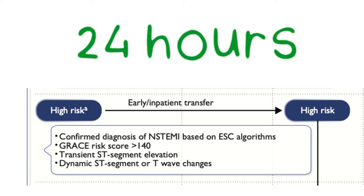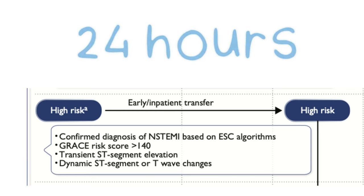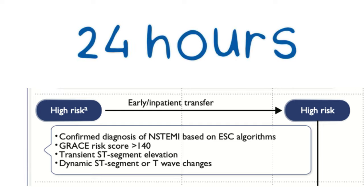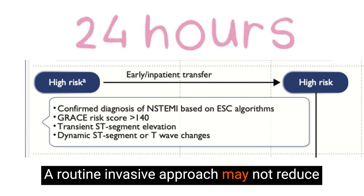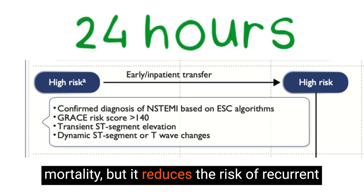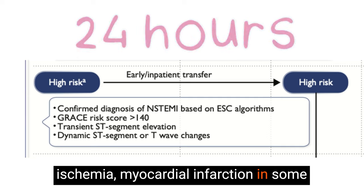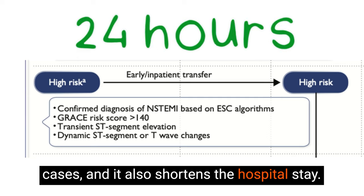High-risk patients are those with a confirmed diagnosis of non-STEMI who have troponin elevation, dynamic ST-segment or T-wave changes, transient ST elevation, or a GRACE risk score more than 140. These patients should go for invasive angiography within 24 hours. The majority will usually have a coronary thrombus, plaque rupture, erosion, severe lesions, or multi-vessel disease. A routine invasive approach may not reduce mortality, but it reduces the risk of recurrent ischemia, myocardial infarction in some cases, and shortens hospital stay.